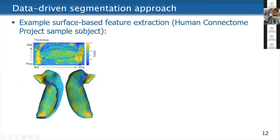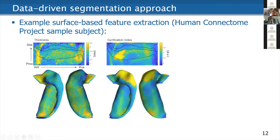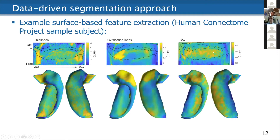This is not from BigBrain — this is from MRI. I wanted to show you examples of some features we could map here. We have the different thicknesses, and the black lines represent our manually segmented subfield boundaries from BigBrain. Here is a gyrification index, and here, T2 weight. We saw some differences between the different subfields. It's a little bit noisy still, and it's only from one subject in this case.